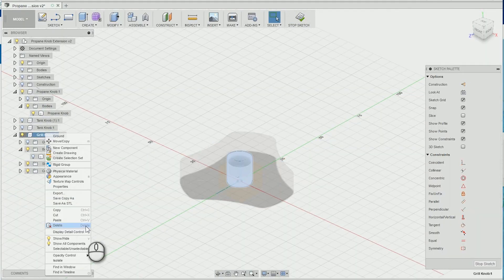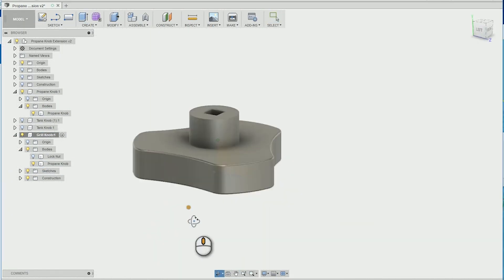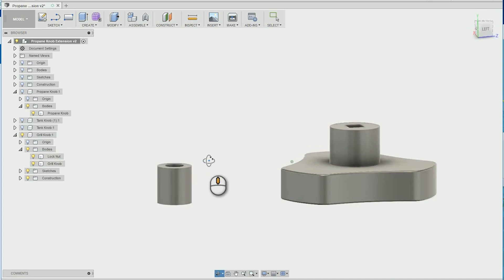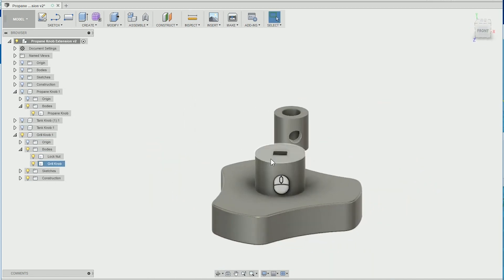To make the grill side of this extendable knob, I just added a coupler and a locking nut to my existing model. This turned out to be a great size with a good feel in the hand.